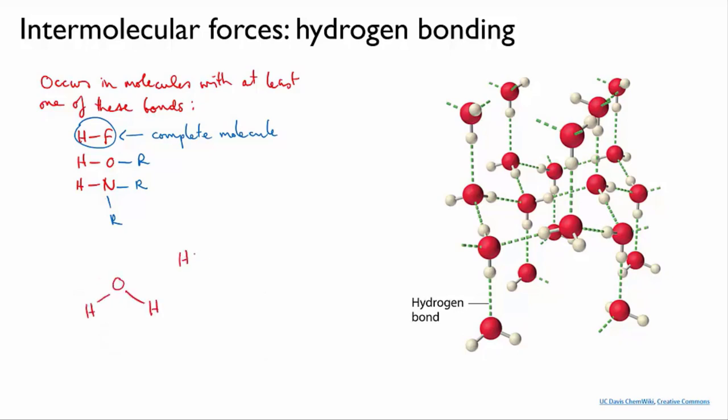For instance, when we look at water – it's not organic, but it's a good example of hydrogen bonding – the hydrogen bonding occurs specifically between the oxygen of one water molecule and a hydrogen atom in the next.